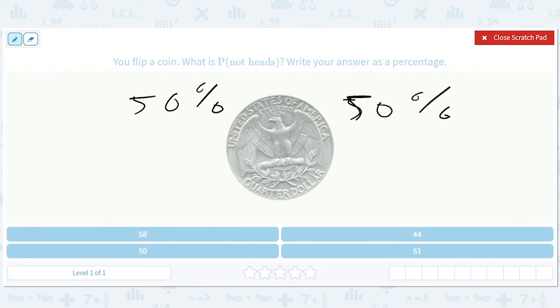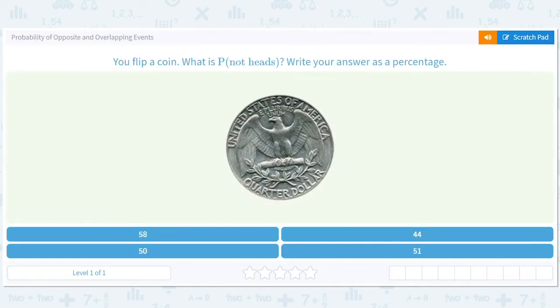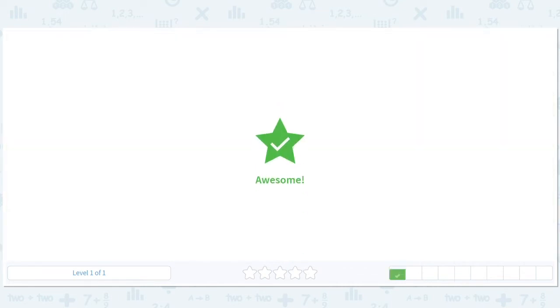The answer is 50%. Now, people will say that coins are actually, the way the physics of the coin is, it's not exactly even. So the way the weighting works, it's actually slightly not 50-50, but that's not the point of this question. So we're going to go 50.